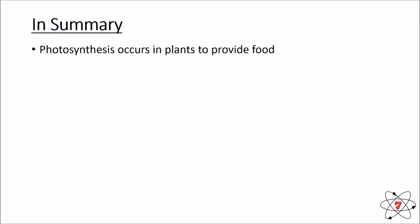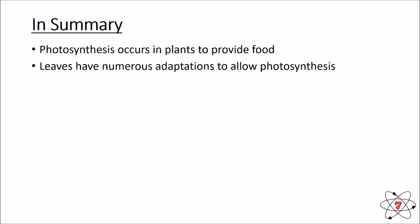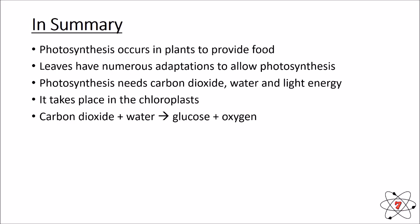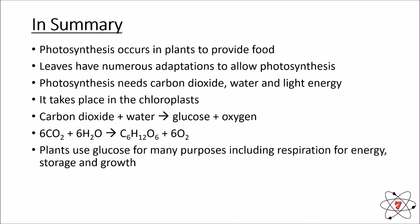In summary: photosynthesis occurs in plants to provide food, and leaves have numerous adaptations to allow it. Photosynthesis needs carbon dioxide, water, and light energy; it takes place in the chloroplasts found in the palisade mesophyll layer. The reaction is CO₂ + H₂O → glucose + O₂, or 6CO₂ + 6H₂O → C₆H₁₂O₆ + 6O₂. Plants use glucose for respiration, storage as starch, and growth. Iodine solution turns black on a leaf that contains starch. Keep on doing your quizzes and using your resources — until the next lesson, keep learning!